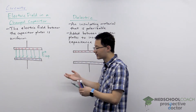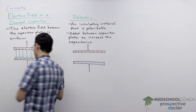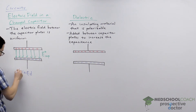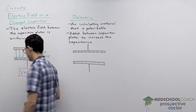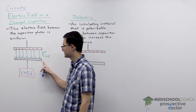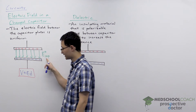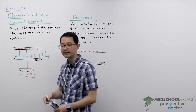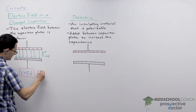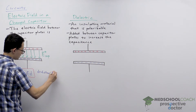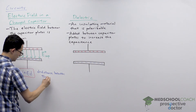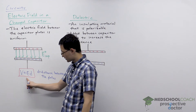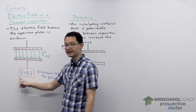As for how strong this electric field is, there's an equation you can use to calculate that. It is V equals ED. V is the voltage across the capacitor plates — of course the greater the voltage, the greater the potential difference, the stronger the electric field that is produced. D is the distance between the plates. So essentially, the electric field times the distance between the plates gives you the voltage.